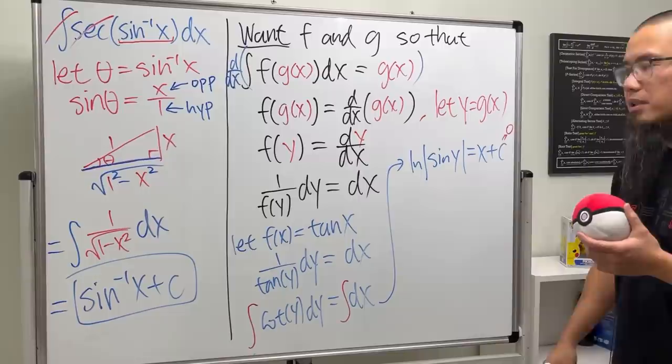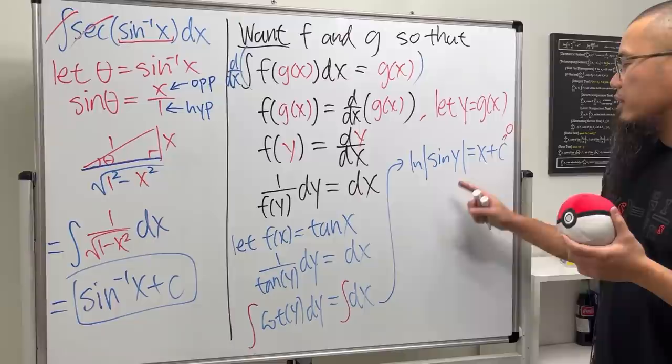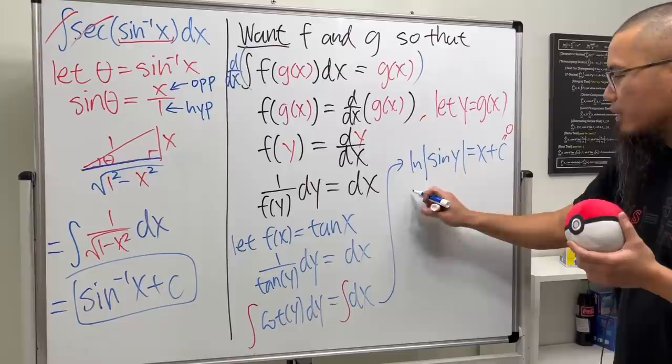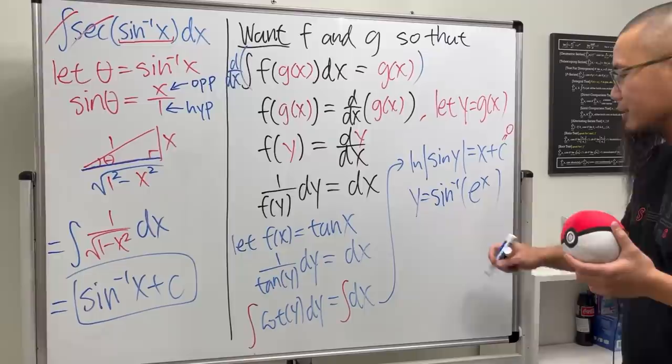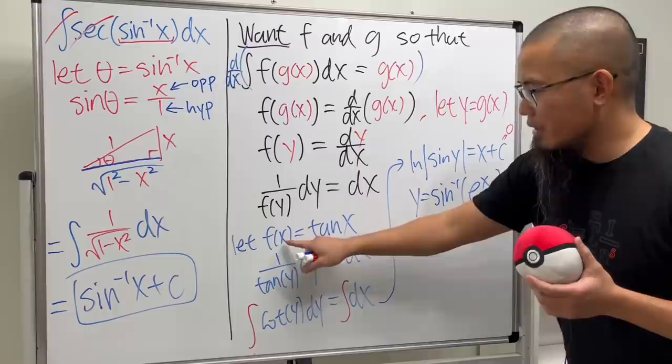And again to make this cleaner let's pick C to be zero. And of course you can solve for y, take e to the power here and e to the power here, and then do the inverse sine of both sides. You get y is equal to inverse sine of e to the x. How crazy is this.